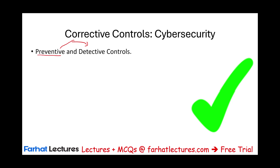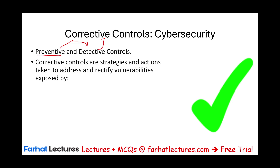If they were successful or not successful at that point — once they penetrated the system — we have to go back and take corrective actions. Corrective actions are strategies and actions taken to address and rectify weaknesses and vulnerabilities exposed by a security incident. Remember, corrective controls are post-incident: something happened and we are reacting. Or we performed an audit and found a problem, or there was a new rule or regulation, a shift in industry standards, where we have to update our security procedures.